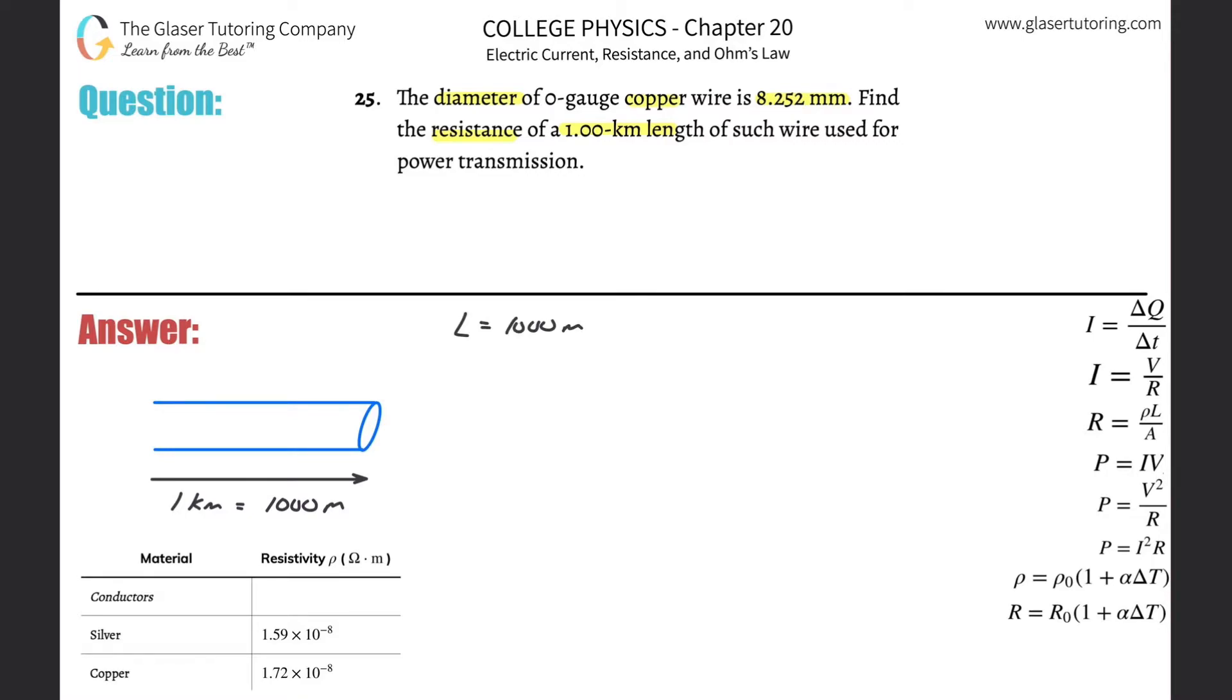They also tell me the diameter of the wire. Now we have to remember that in order to calculate this, we're going to need to know the area, the cross-sectional area. And by the way, why am I thinking about these units? Well, the reason is because they're asking me to find the resistance and they're telling me a length and a diameter of the cross-section.